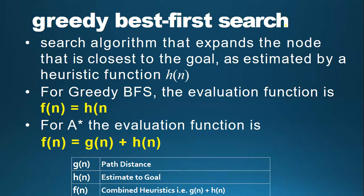The best-first search algorithm allows us to take the advantage of both depth-first search and breadth-first search algorithms, which were discussed in the previous lecture as uninformed search strategies. With the help of the best-first search strategy, at each step we can choose the most promising node. In the greedy best-first search algorithm, we expand the node which is closest to the goal node, and the closest cost is estimated by the heuristic function H(n).